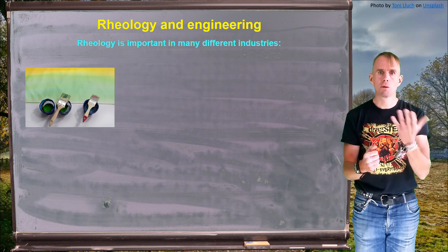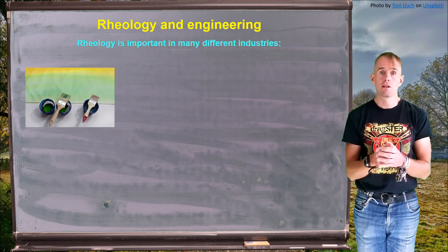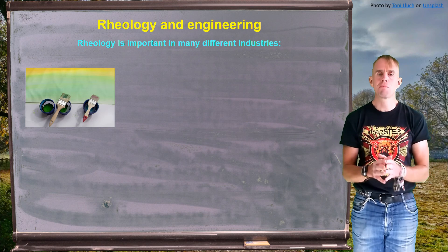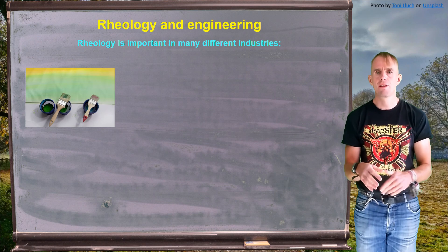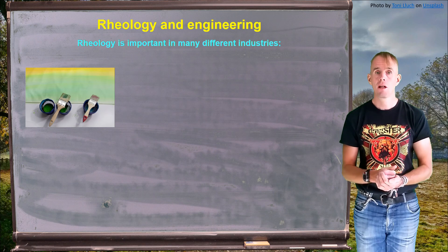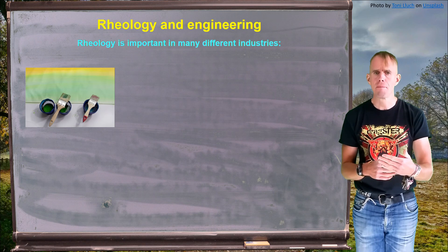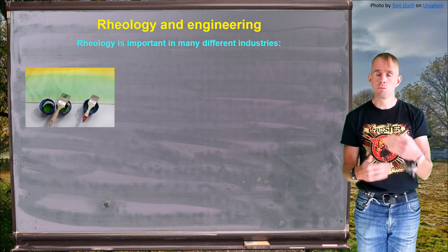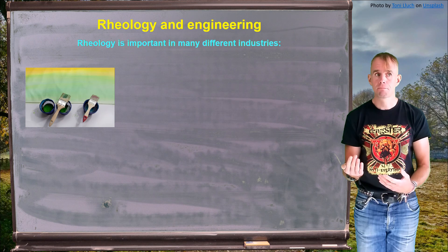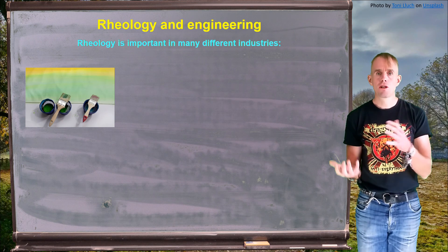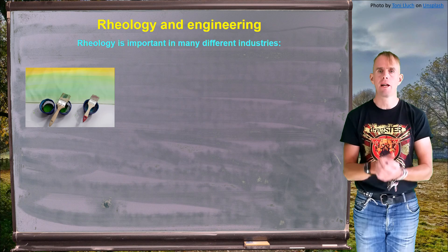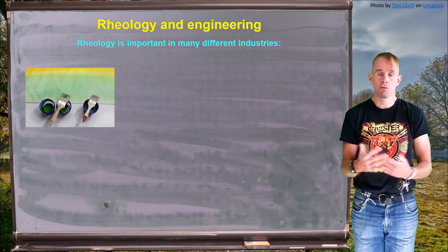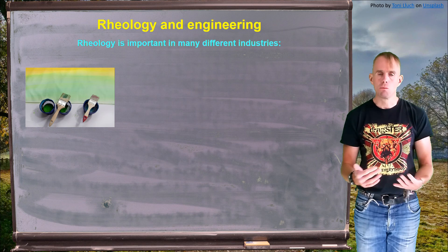You can apply a similar argument for when you're painting a surface. Again, the rate of deformation is high, we want the viscosity to be low, such that the paint can easily flow onto that surface. However, when the paint is on the surface, there is no deformation being applied, and we want the paint to stay there. So we want it to exhibit a very high viscosity, or perhaps we even want it to behave in a solid-like manner. And so, we have this shear thinning behaviour, or viscoplastic behaviour, that makes paint what it is. Without it, if paint was a Newtonian liquid, it wouldn't work.